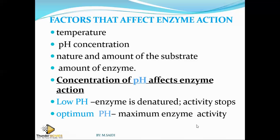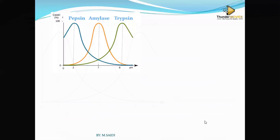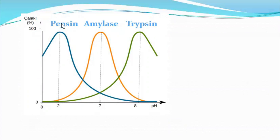Low pH will denature the enzyme and its activity will stop. At optimum pH, you have maximum enzyme activity — that is the best pH for the enzyme to work in. High pH will also denature the enzyme and activity will stop. For example, pepsin works in acidic medium from pH 0 to 8, but its maximum activity is at pH 2. If it goes to alkaline or neutral, the activity stops. Pepsin's optimum pH is 2 — this is the best pH for pepsin to work, and we find it in the stomach.